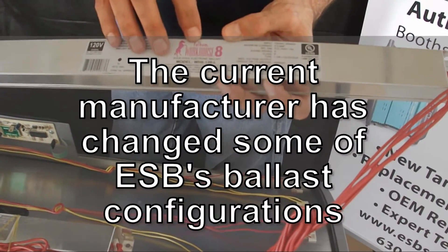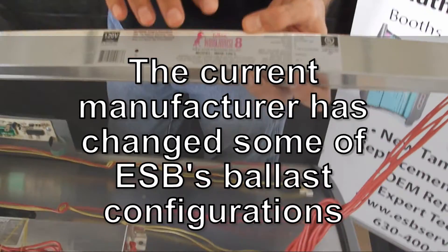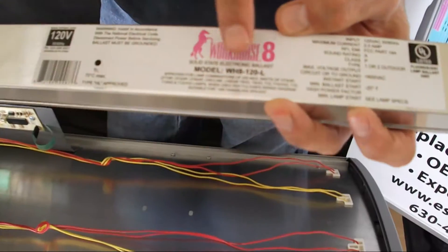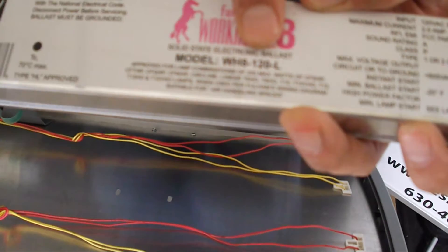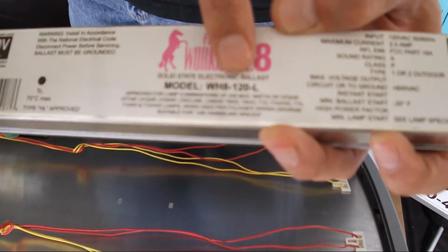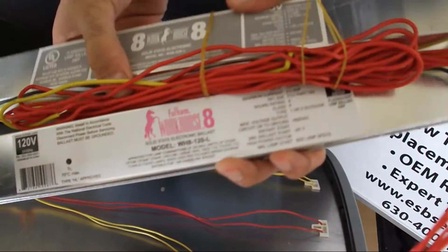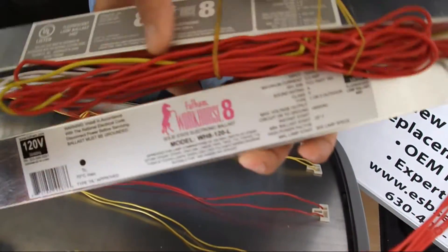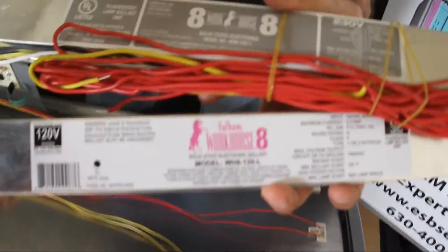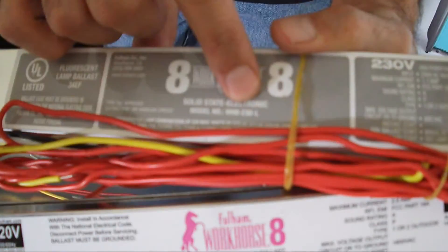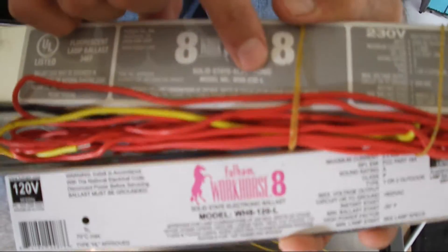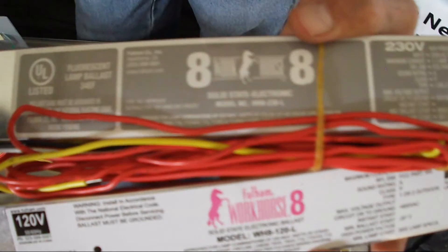The RT ballasts are not jumper-selectable as far as the voltage goes. Like, this one here is 120 volt, and this is 120 volt only. Now, this is what the same ballast looks like, but this would be a 230 volt. It still says workhorse 8 on it, but then you see the voltage here, WH-8230. That's the voltage indication there.